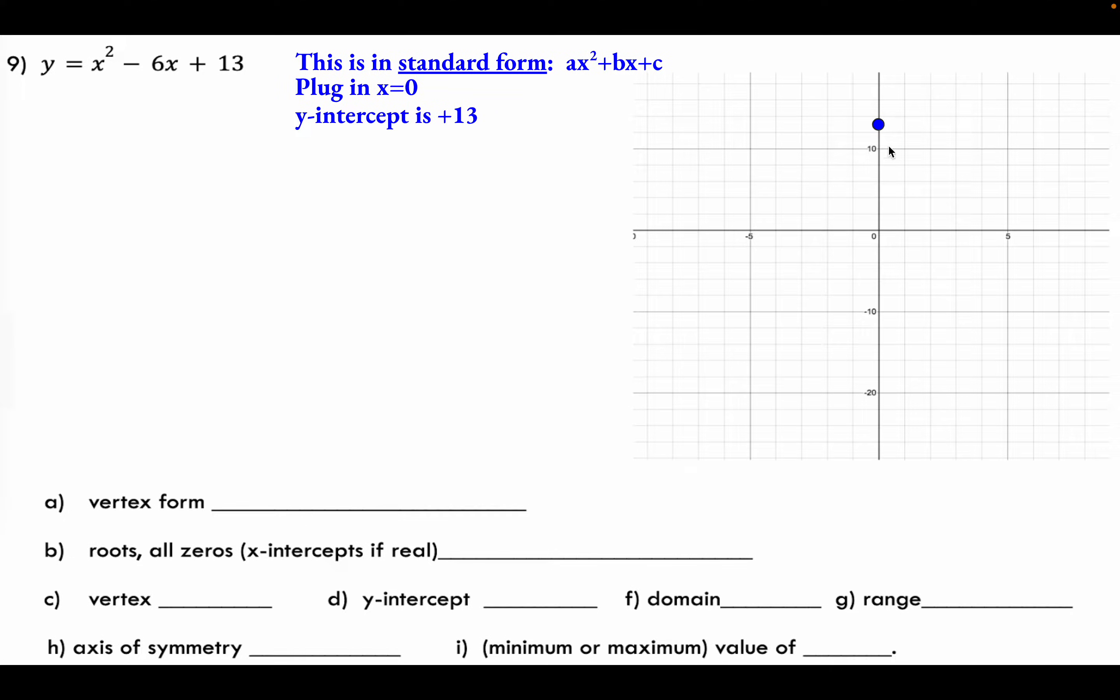This is at 13. Each one of these vertical tick marks is actually worth 2, so you can see it goes 2, 4, 6, 8, 10. So there's our y-intercept.